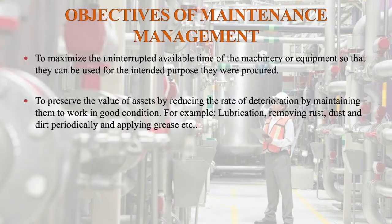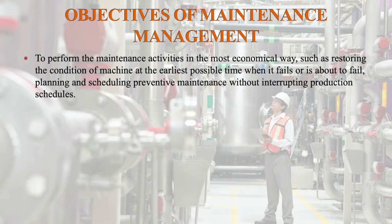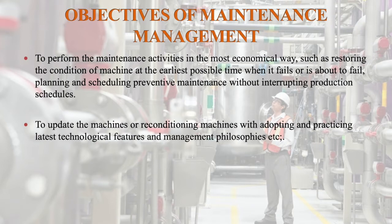Another objective is to preserve the value of assets by reducing the rate of deterioration by maintaining them in good condition — for example, lubrication, removing rust, dust and dirt periodically, and supplying grease. To perform maintenance activities in the most economical way, restoring the condition of the machine at the earliest possible time when it fails or is about to fail. Planning and scheduling preventive maintenance without interrupting production schedules, and updating or reconditioning machines by adopting the latest technological features and management philosophies.